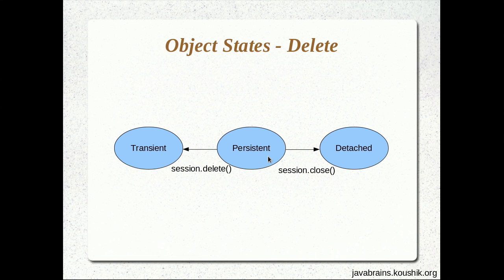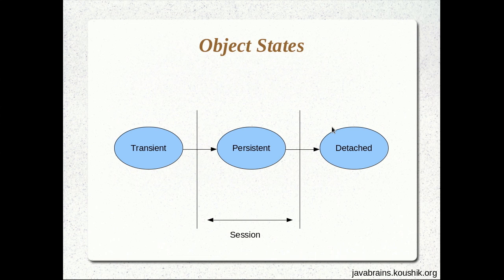That's one way in which a persistent object can become transient again. And of course, a persistent can become detached by a session.close. The key thing to note is that the change from transient to persistent, and the change from persistent to detached, happens because of session involvement. The transient object becomes persistent once it's attached to the session, and the persistent object becomes detached once it is removed from the session. There is one particular scenario where you would want to move an object from a detached state back to persistent — we'll look at a use case for that.